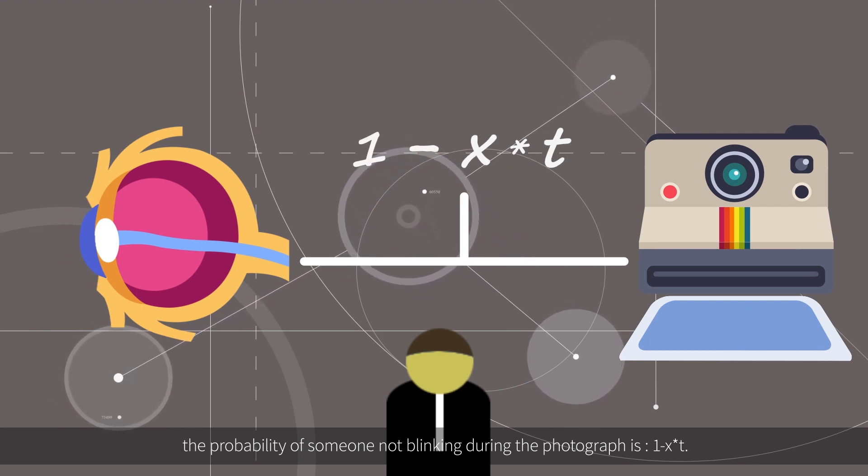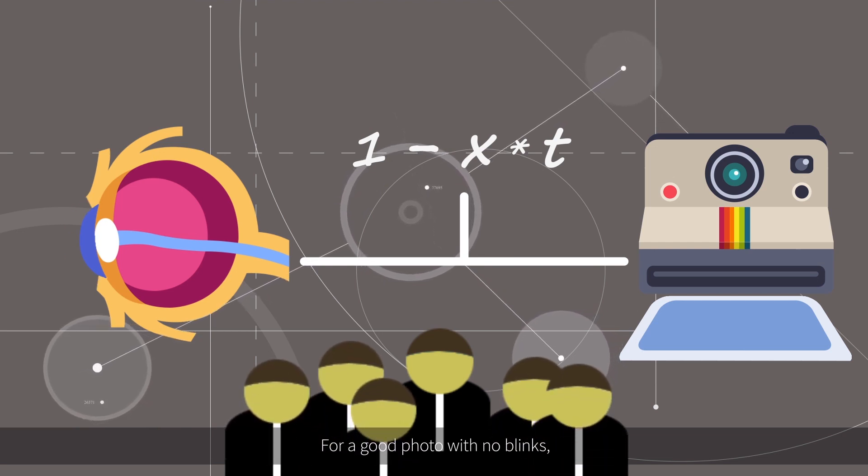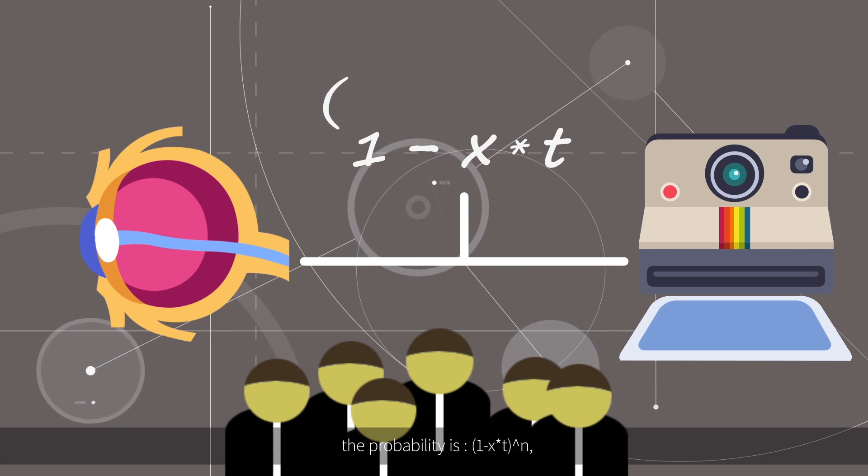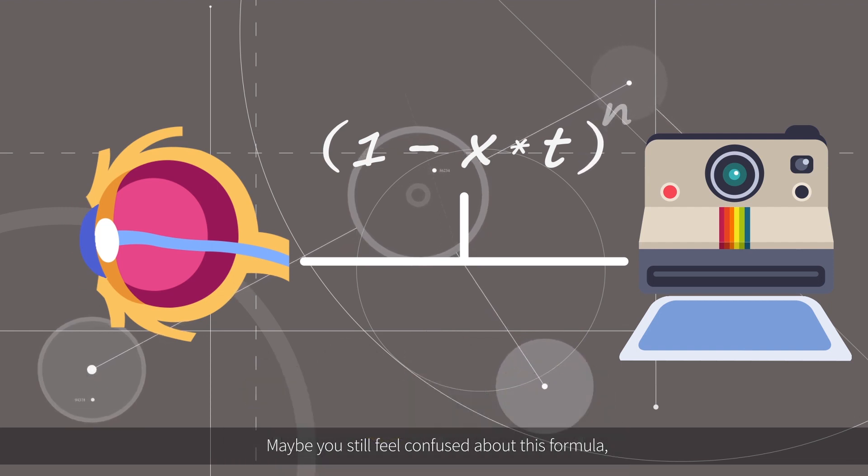Furthermore, we extend the formula to more people. For a good photo with no blinks, the probability is (1 - x * t)^n, where n is the number of people.